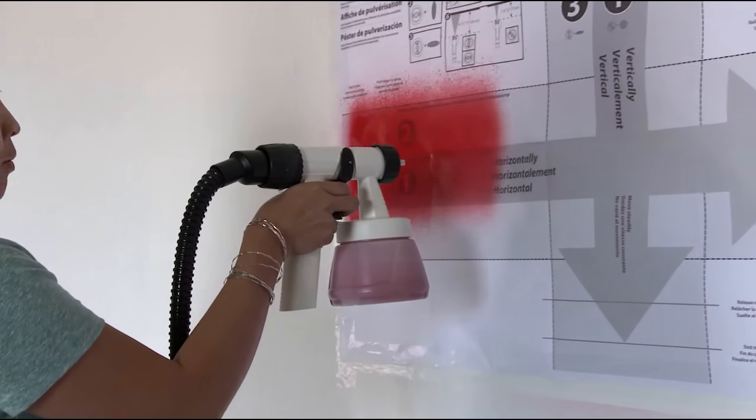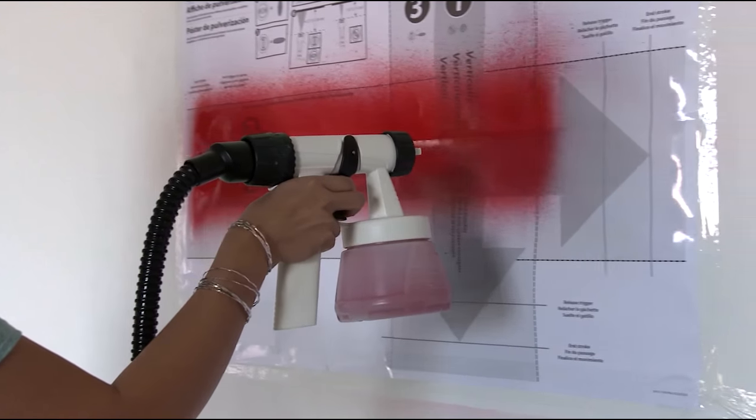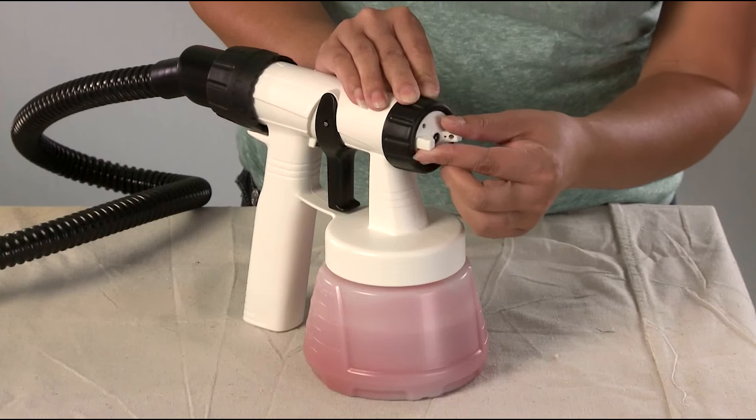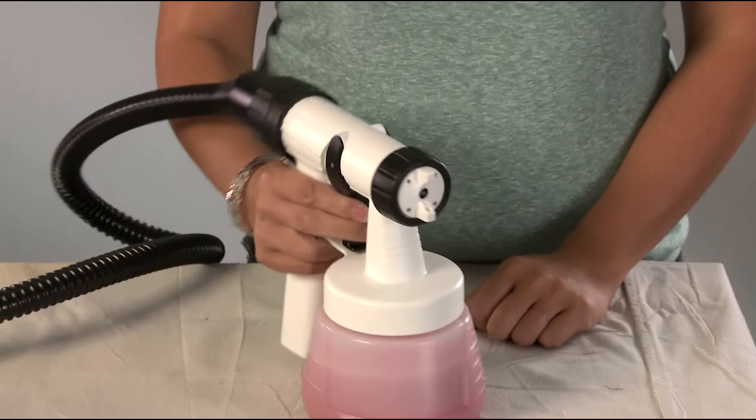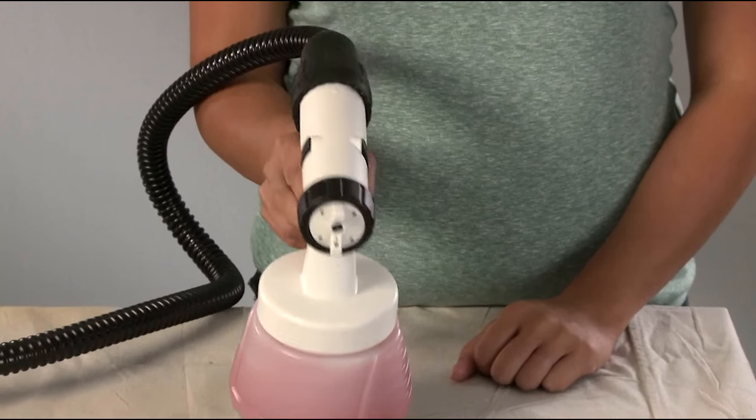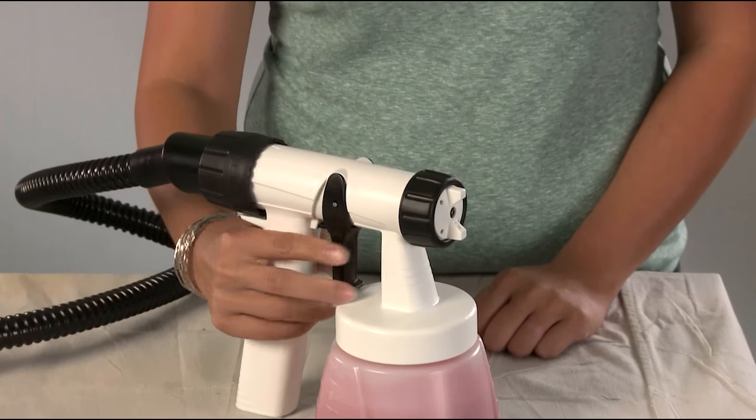Once your material flow is adjusted, set your pattern by turning the air cap ears on the front of the spray gun. When the air cap ears are in the up and down position, your spray pattern will be horizontal, meaning that you should move or spray in an up and down motion.